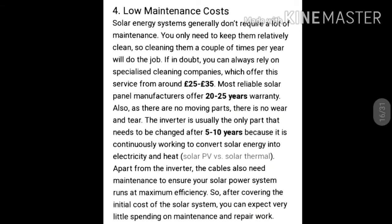Our next advantage is low maintenance costs. Solar energy systems generally don't require a lot of maintenance — you only need to keep them relatively clean, so cleaning them a couple of times per year will do the job. Most reliable solar panel manufacturers offer 20 to 25 years warranty. As there are no moving parts, there is no wear and tear. The inverter is usually the only part that needs to be changed after 5 to 10 years, because it is continuously working to convert solar energy into electricity and heat. The cables also need maintenance to ensure your solar power system runs at maximum efficiency. After covering the initial cost of the solar system, you can expect very little spending on maintenance and repair work.